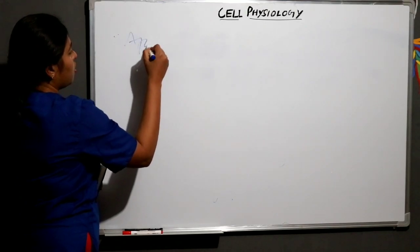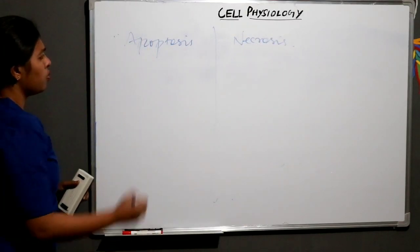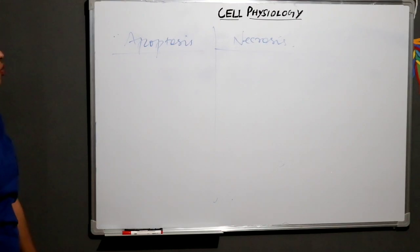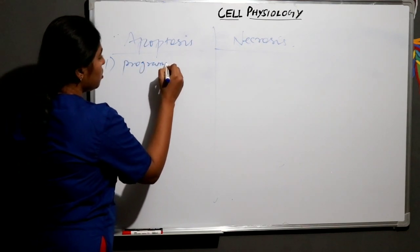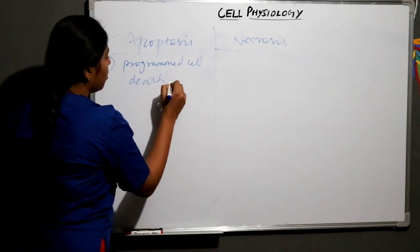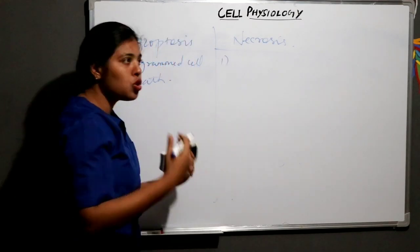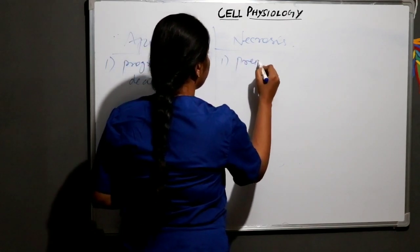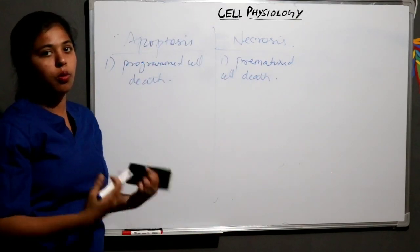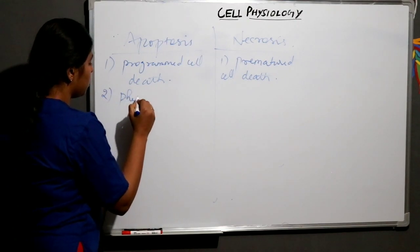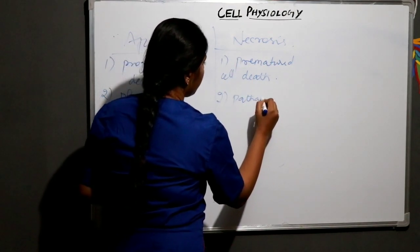The second topic is the difference between apoptosis and necrosis. Apoptosis is defined as programmed cell death, which means it is already programmed in our body by our own immune system. Necrosis is not programmed — it is premature cell death. Since apoptosis is programmed by the immune system, it is a physiological process. Necrosis, on the other hand, is a pathological process.